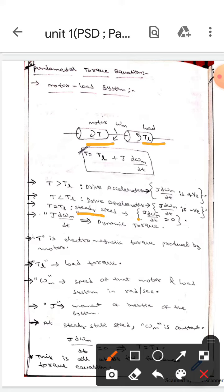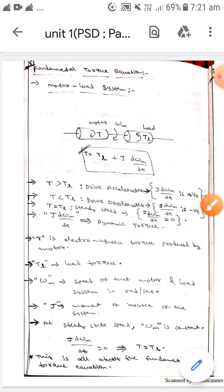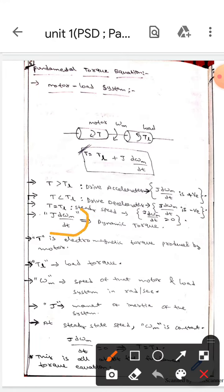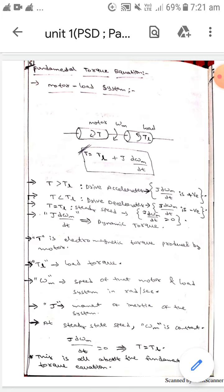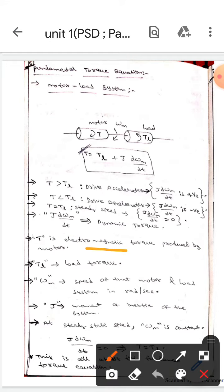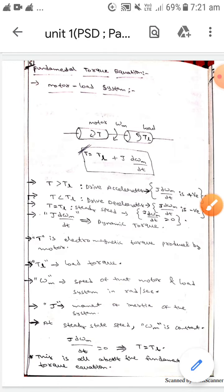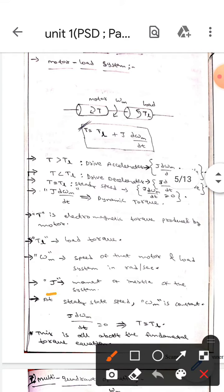Here J × dωm/dt is dynamic torque. T is the ultimate torque produced by motor, whereas TL is the load torque. Omega m is the speed of the motor and load system in radians per second, whereas J is the moment of inertia of the system.